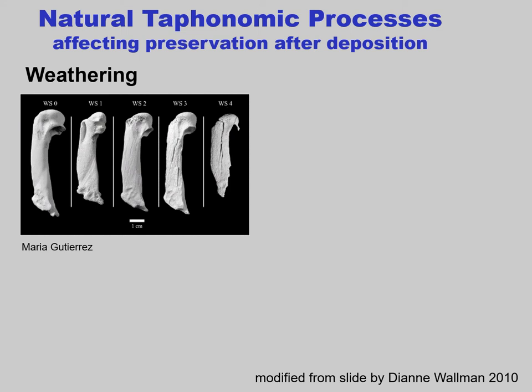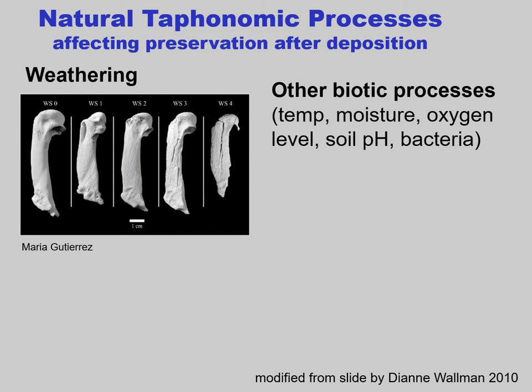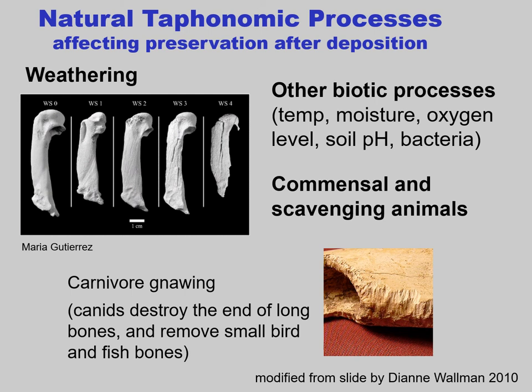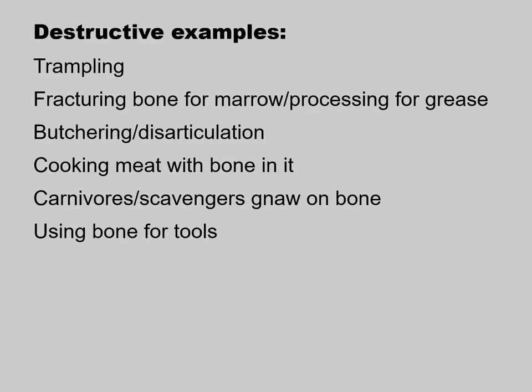Natural taphonomic processes also affect preservation after deposition. One is weathering, especially if the bone was left on the surface — illustrated from left, an unweathered bone, to right, a badly weathered bone. Other biotic processes affect bone, particularly soil pH, but also temperature, moisture, oxygen level, and bacteria. Commensal and scavenging animals chew on bones — canids destroy the ends of long bones and totally remove small bird and fish bones. Other destructive examples include trampling, fracturing bone deliberately to get marrow or process it for grease, butchering, disarticulation, cooking meat with bone on it, carnivores gnawing on bone, or using bone for tools.